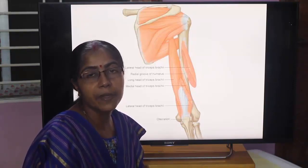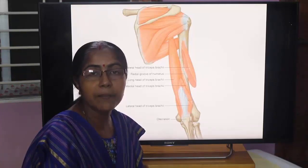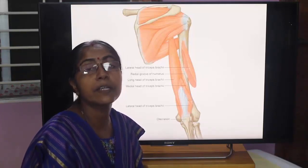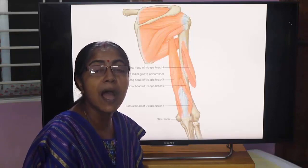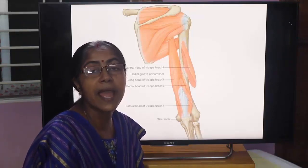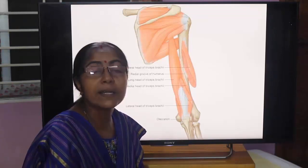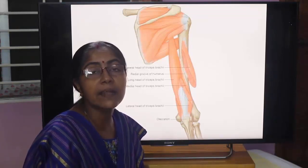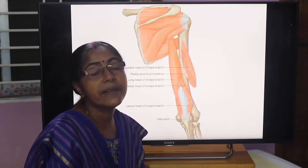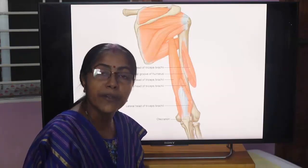Our next topic is the Posterior Compartment of Arm. What do you mean by arm? How is the arm divided into anterior and posterior compartments? What are the contents of the posterior compartment and the description of those contents?